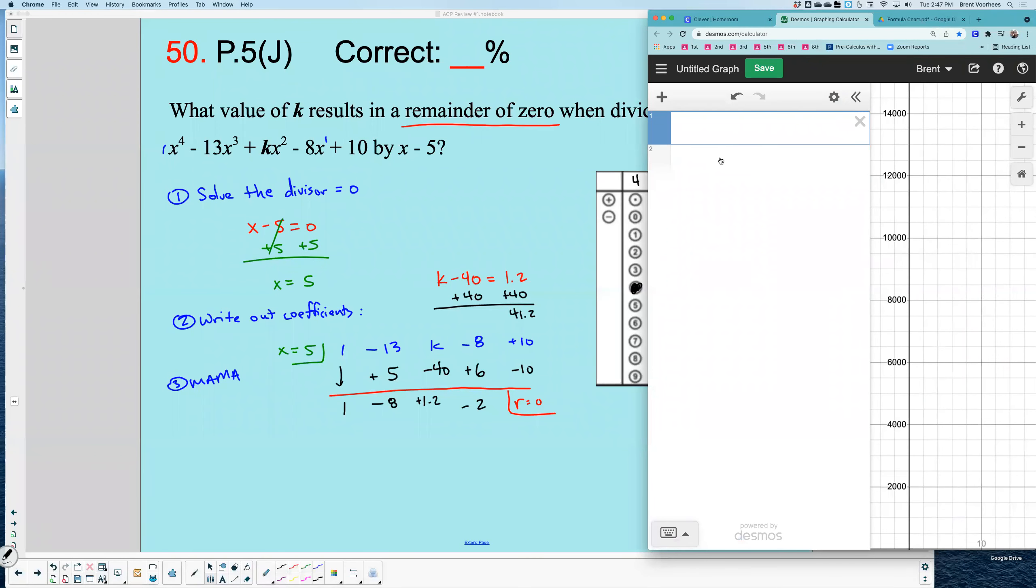So let me go over here to my graph. What I'm going to do is type in this equation and we're dividing here. So in the numerator, it's x to the fourth minus 13x cubed plus kx squared minus 8x plus 10. All that divided by x minus 5. And I want to add a slider.